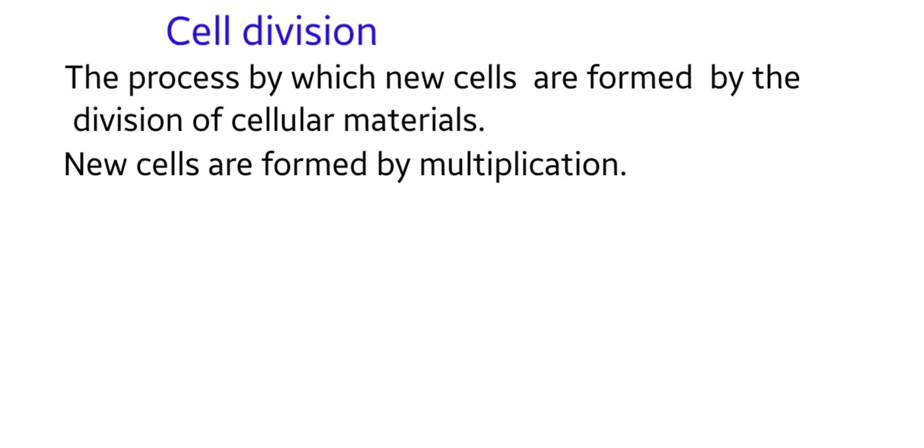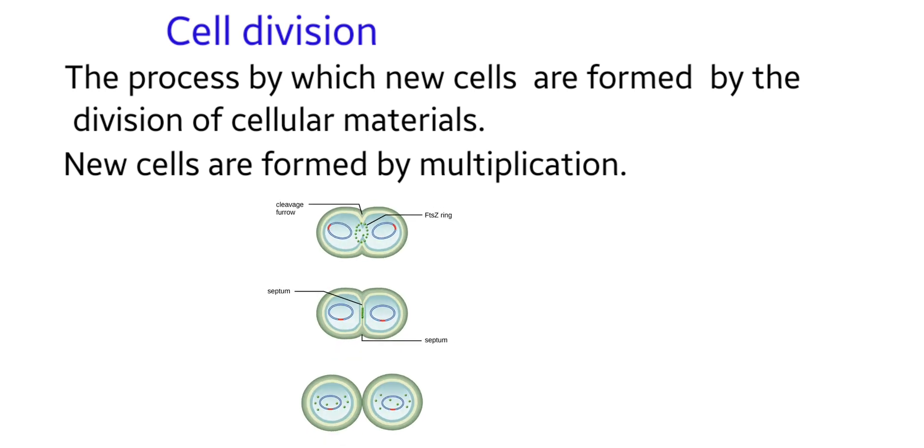When the cell reaches the maximum size it starts to divide and multiply its number. Initially the cell divides into two, again each of them divide into two and four cells are formed, then again by cell division eight cells form and this process continues.